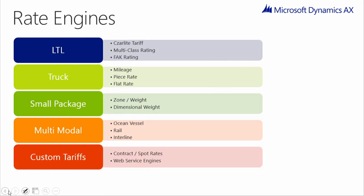One engine is the mileage engine, which is used to configure how mileage is calculated. A second engine is the zone engine, which is used to configure how zones in the zone master are determined. Transportation in AX can currently be configured to work with two separate zone definition types: state zones and postal code zones. A third engine is the dimension weight engine, which calculates how rates are calculated. Another type of engine is the transit time engine, which configures how transit time is calculated, either on calculation, mile breaks, or point to point.